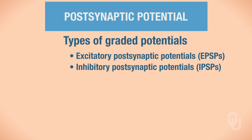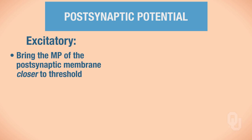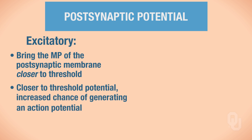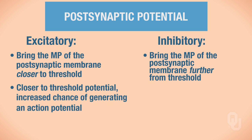To review quickly: excitatory postsynaptic potentials bring the membrane potential of the postsynaptic membrane closer to threshold, which is negative 55 millivolts. The closer you are to threshold, the greater your chances of generating an action potential. If threshold is reached, an action potential will occur. By contrast, in an inhibitory postsynaptic potential, we want to bring the membrane potential further from threshold — moving it in a more negative direction.